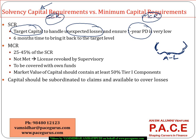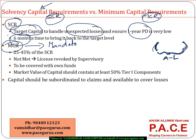If any insurance company fails to meet this SCR requirement at any point in time, it is given a six-month time period to come back to the target level — either to raise capital or whatever is needed. But at the same time, along with the solvency capital requirement, there is something called minimum capital requirement, which is mandatory to have capital.